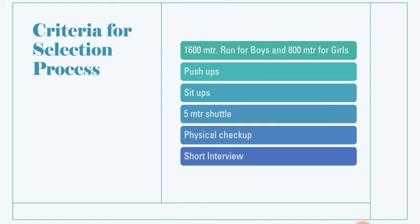Next, what will be the selection process for NCC? Once the enrollment process is over, I will send a notice to the Telegram group with details of when to appear for selection. Keep in mind: for boys there will be a 1600 meter run, and for girls an 800 meter run. There will also be push-ups, sit-ups, and a 5-meter shuttle run. For girls, no push-ups or sit-ups — they only appear for the 5-meter shuttle.